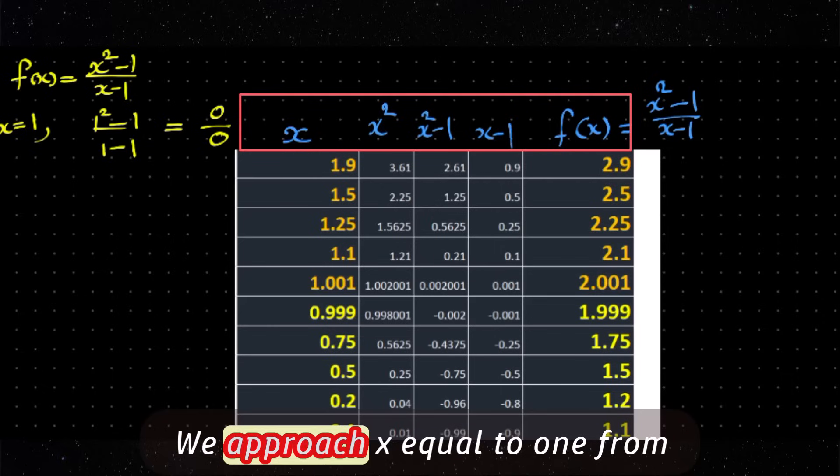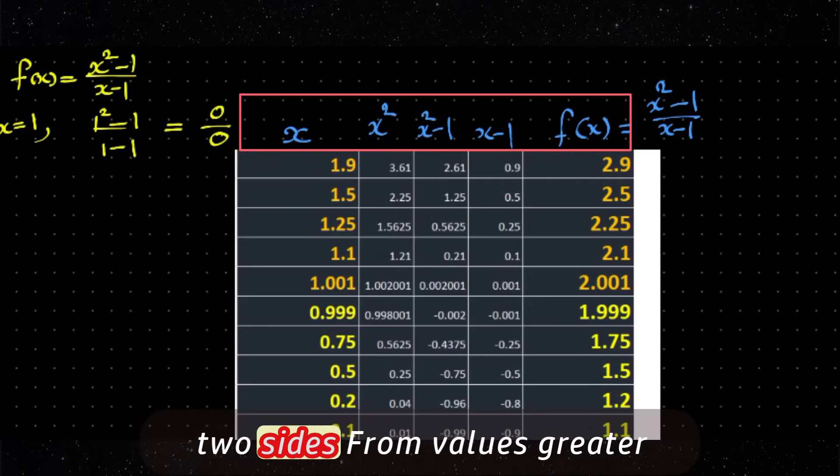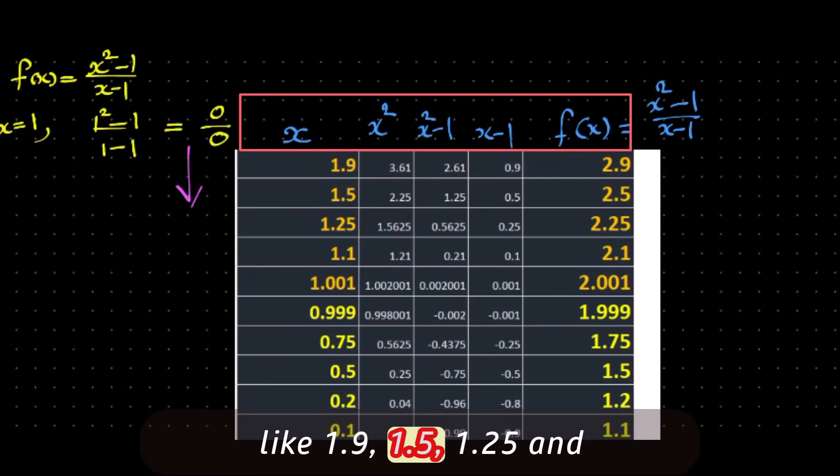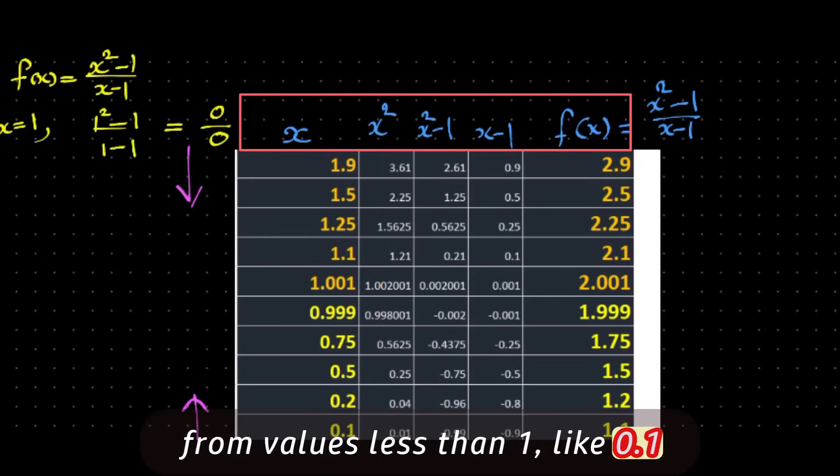We approach x = 1 from two sides. From values greater than 1 like 1.9, 1.5, 1.25 and from values less than 1 like 0.1, 0.5, 0.9, etc.